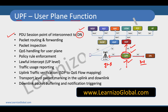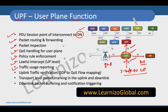If we want to refer this to 4G EPC, we can consider this as the SGW and PGW user plane function — the user plane part is typically taken care of by UPF in the 5G core network. It takes care of packet routing and forwarding based on rules provided by SMF, packet inspection, QoS handling for user plane policy rule enforcement, lawful interception, and traffic usage reporting.